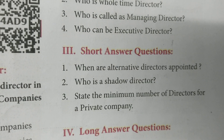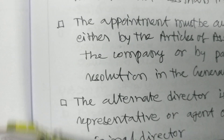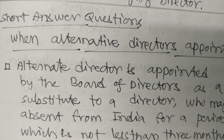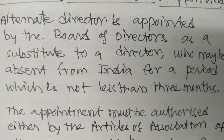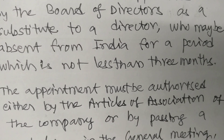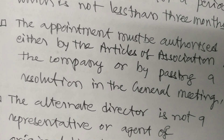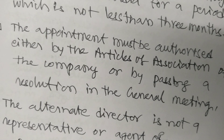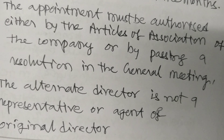The first question is: When are Alternate Directors appointed? Alternate Directors are appointed by the Board of Directors as a substitute to a Director who may be absent from India for a period which is not less than three months. The appointment must be authorized either by the Articles of Association of the Company or by passing a resolution in the General Meeting.